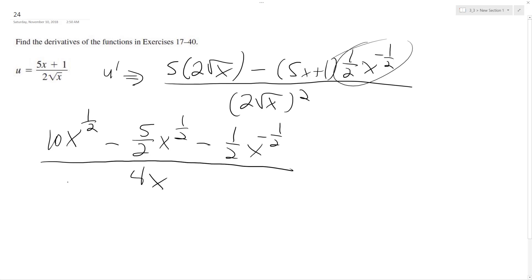I'm going to combine 10x to the half and 5 half. So this ends up becoming 15 over 2, x raised to the 1 half, minus 1 half, x raised to the negative 1 half, all over 4x.